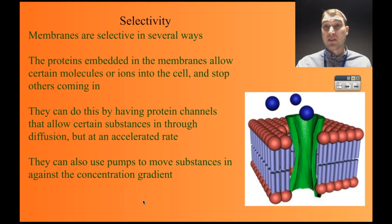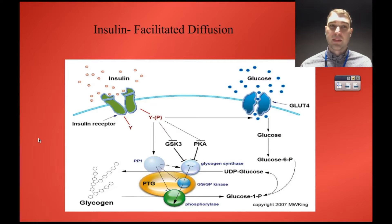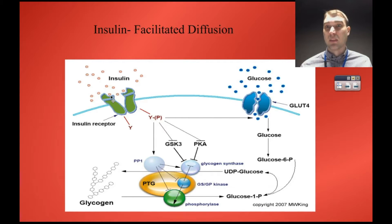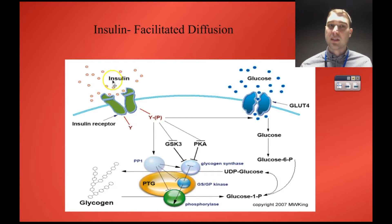Some proteins act as pumps, pumping substances against the concentration gradient into the cell. This is an example of facilitated diffusion, where energy isn't used to transport a substance in — the protein changes shape when the substance meets it, requiring only thermal energy from the environment. For example, insulin meets its receptor, the receptor protein changes shape, and that kicks the insulin into the cell. Once inside, insulin sets off reactions that lead to glucose being absorbed into the cell.